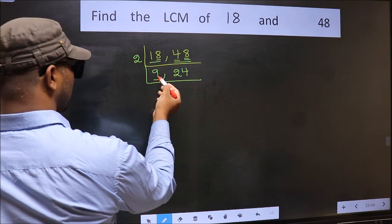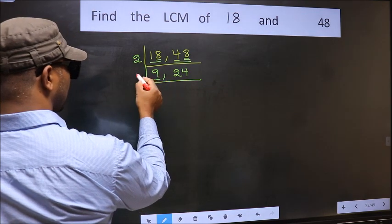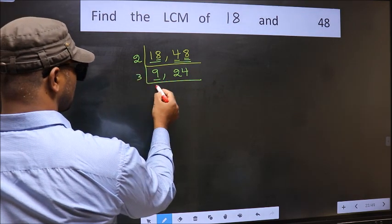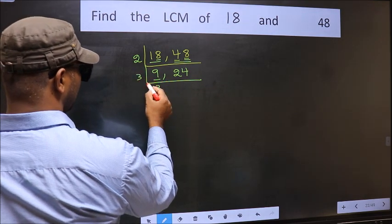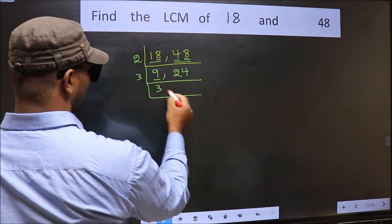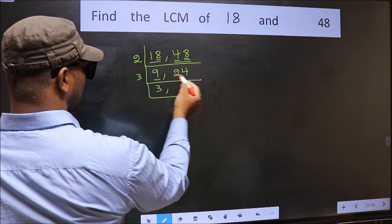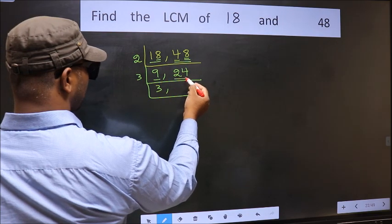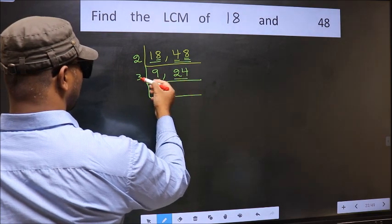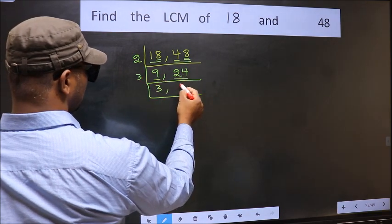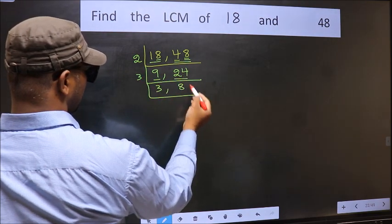Now here we have 9. 9 is 3 threes 9. The other number is 24. When do we get 24 in the 3 table? 3 eights 24.